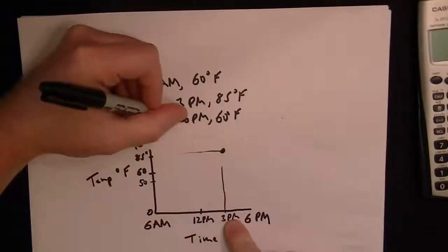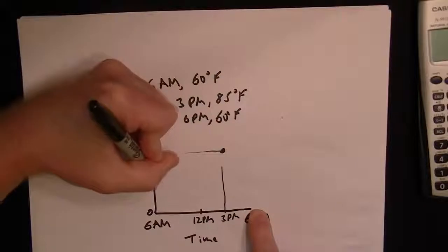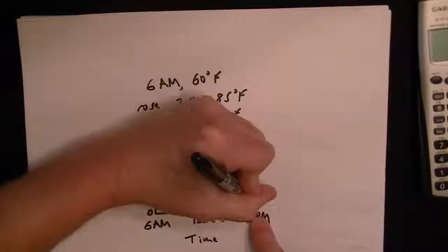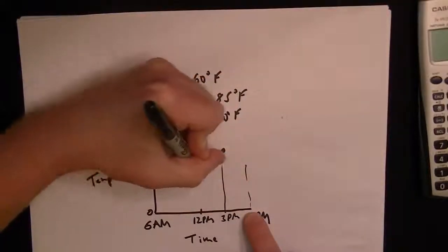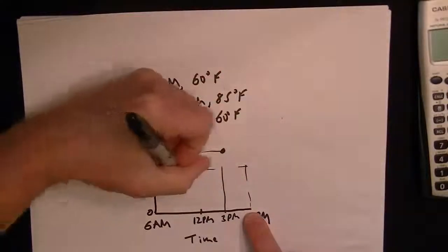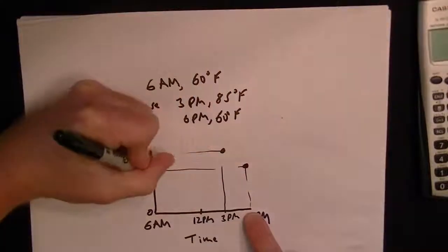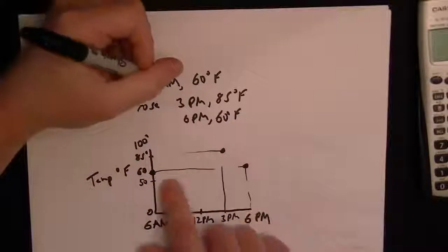And then they said at 6 PM we're back down at 60 degrees. So we have to again go, okay there's 6 PM and there's where the 60 goes across, so there's a point there. So we've got now we've got our three points on the graph.